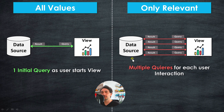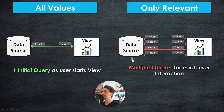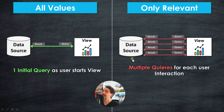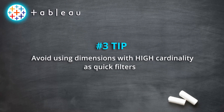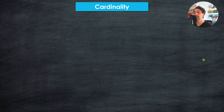Each time the user clicks something or interacts with the view, it keeps sending queries to the data source to get an update, which consumes a lot of resources and memory and slows everything down. So be careful with your quick filters — if everything is set to 'Only Relevant Values,' things might be slow. Consider switching all those filters to 'All Values in Context' or 'In Database.'